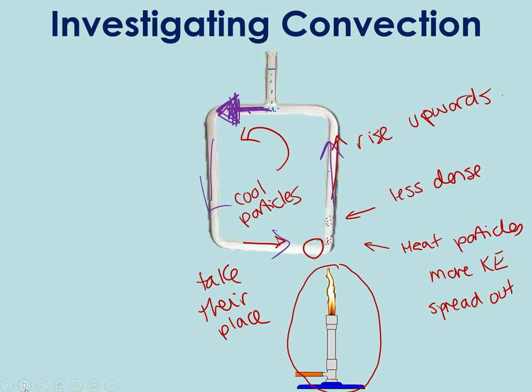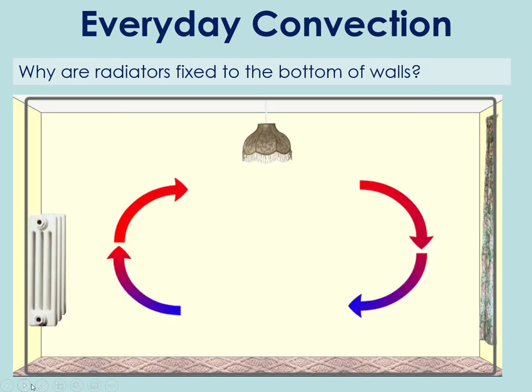Another common example of convection is a radiator. Radiators are found at the bottom of a room, at the bottom of a wall, but they manage to heat the whole room because of convection currents. So what I'm going to do is draw a set of particles here which are cold. If they get heated by the radiator, they're not vibrating very much if they are cold.